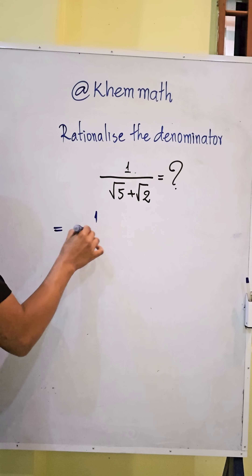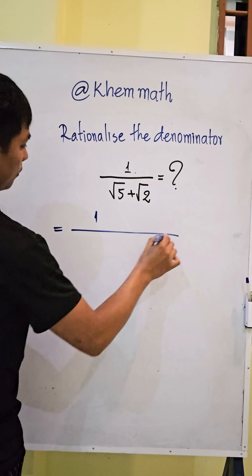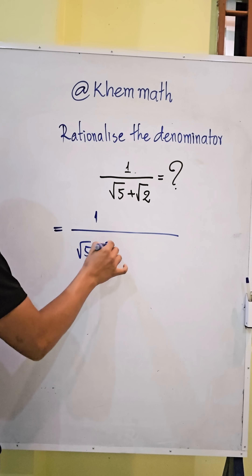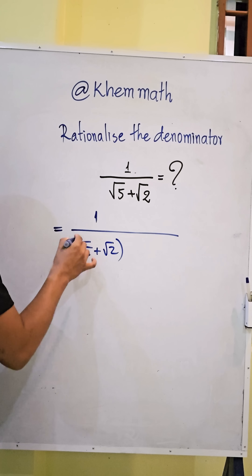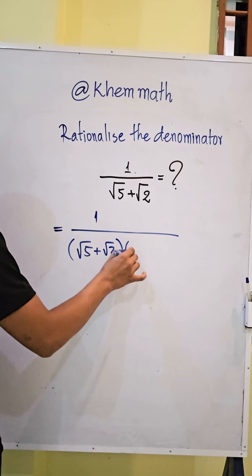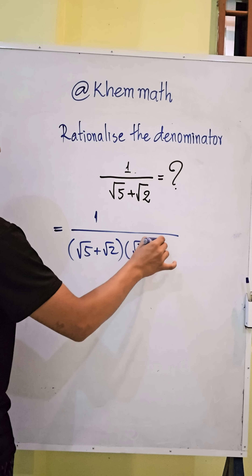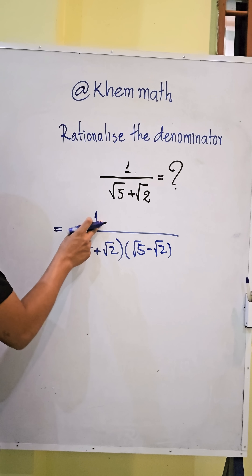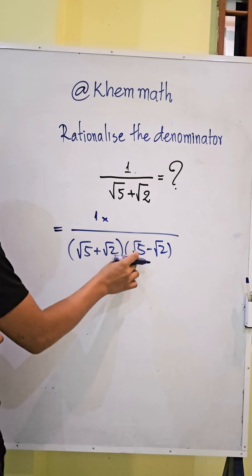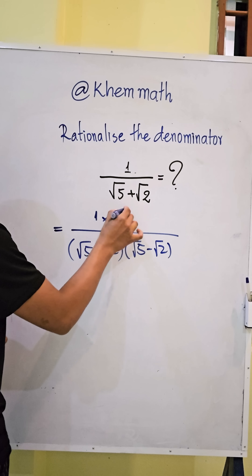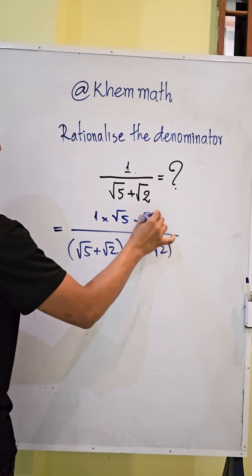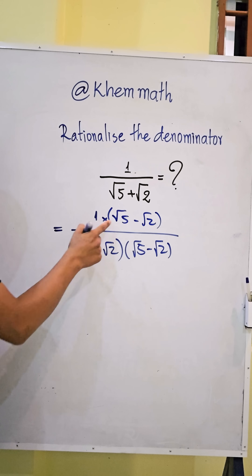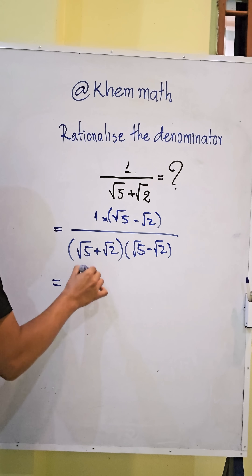So the numerator equals 1, and in the denominator we get square root of 5 plus square root of 2 times square root of 5 minus square root of 2. We also multiply the numerator by square root of 5 minus square root of 2, giving us square root of 5 minus square root of 2 on top.